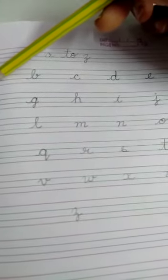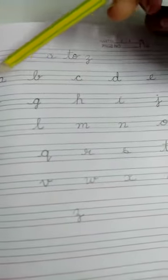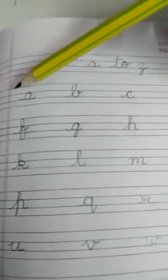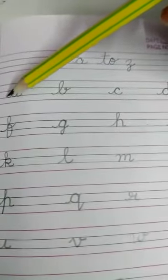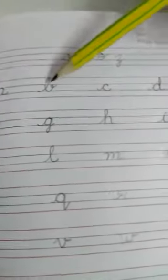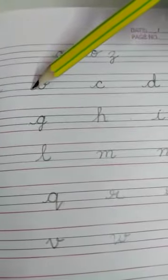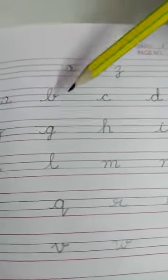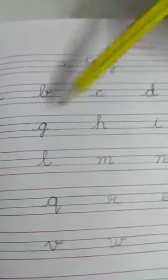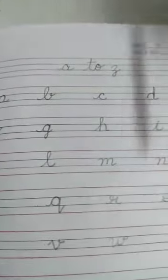If you observe the alphabets, you will see that they have a tail on both sides. If you see A, it is having a tail on this side and this side both. If you see B, B is also having a tail on this side and this side.